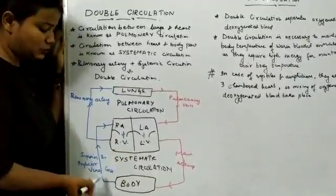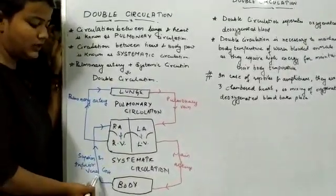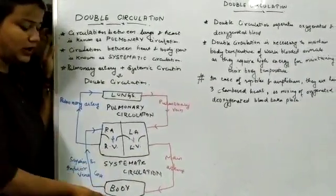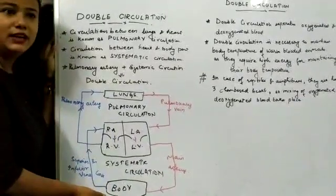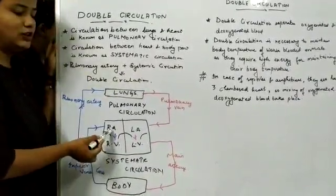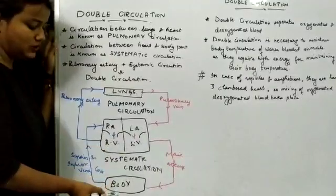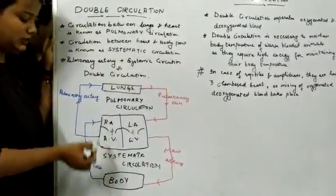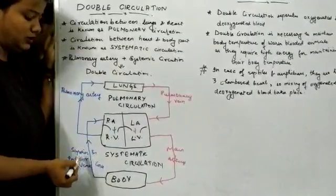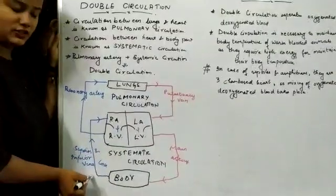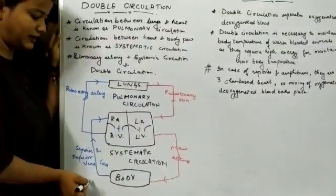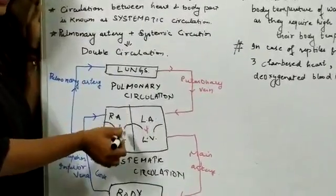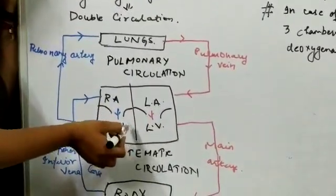The superior vena cava and inferior vena cava bring deoxygenated blood from all different body parts to the right auricle. Body ke different parts se right auricle tak superior aur inferior vena cava deoxygenated blood laati hain. As soon as the right auricle contracts, the blood rushes to the right ventricle.